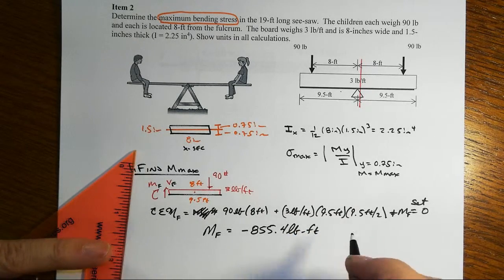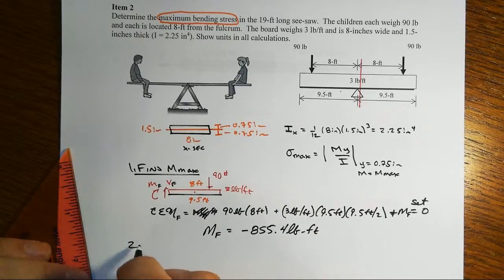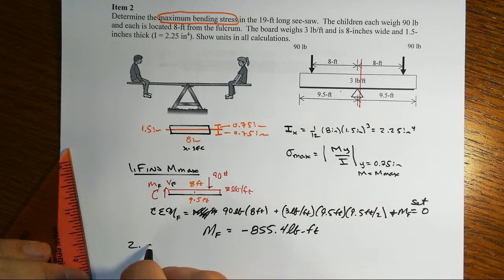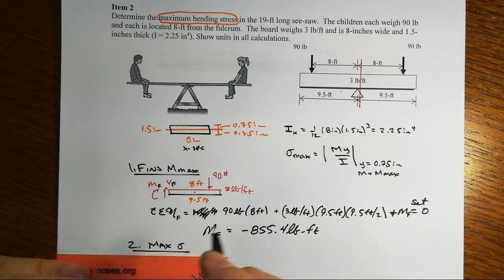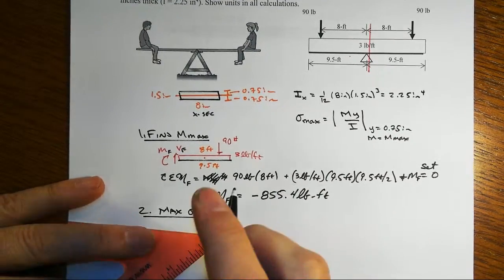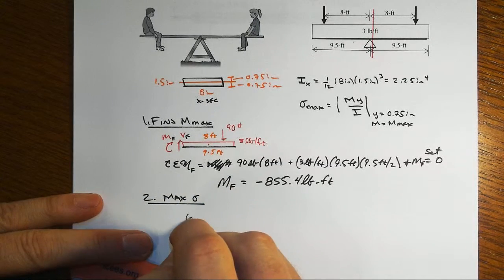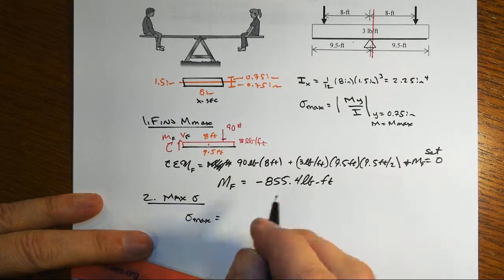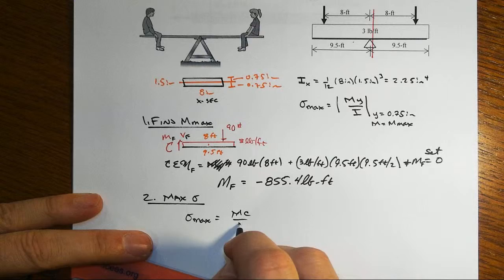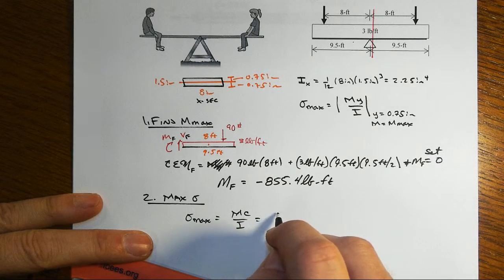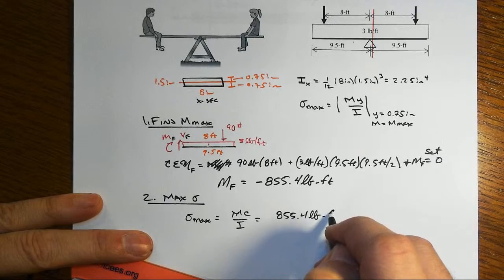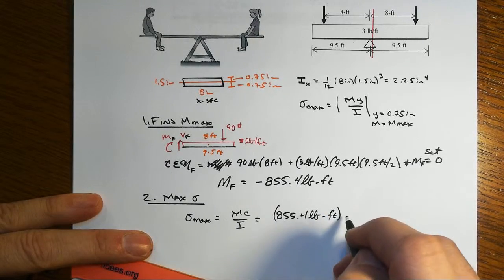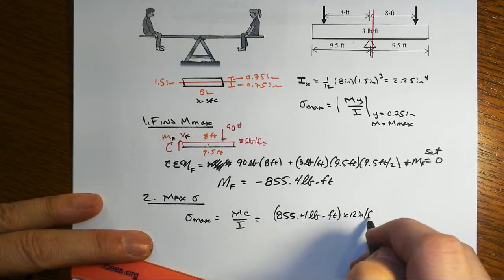Okay, and then we can go and calculate our max normal stress caused by bending. That will be equal to MC/I, so that's 855.4 pound-feet. Then I'm going to convert into pound-inches.